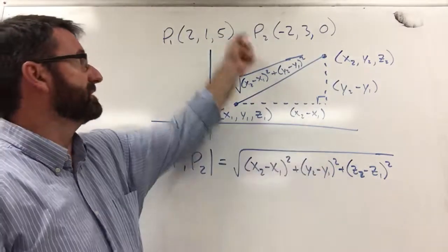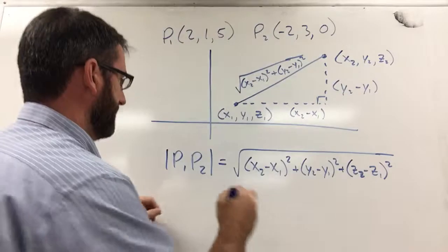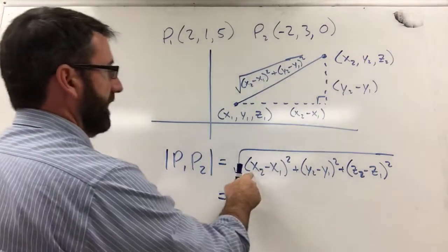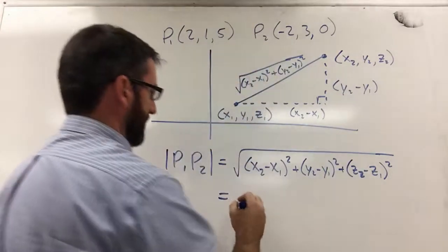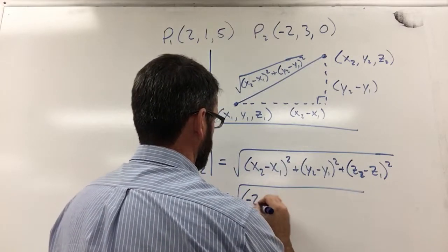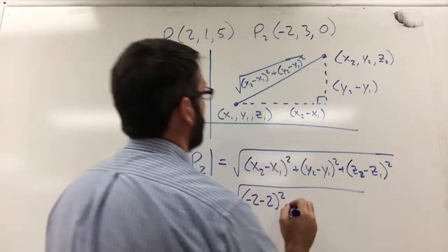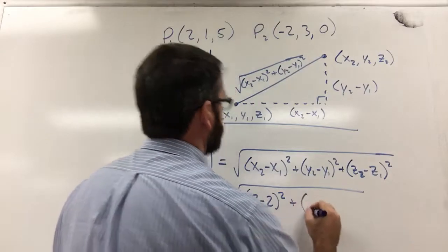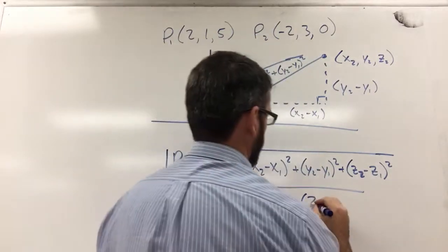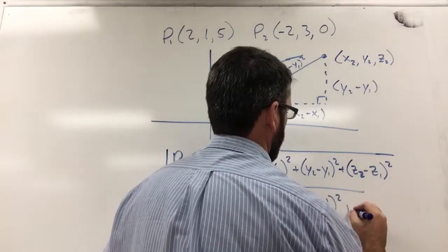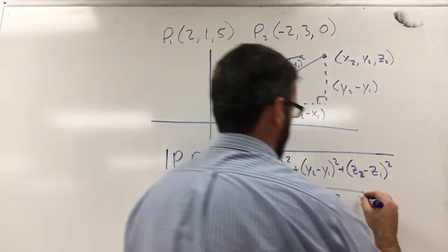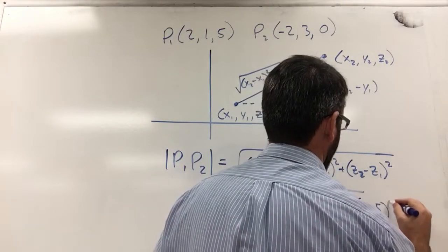And x₂ minus x₁ is going to be the square root of (-2 minus 2) squared, plus (3 minus 1) squared, plus (0 minus 5) squared.